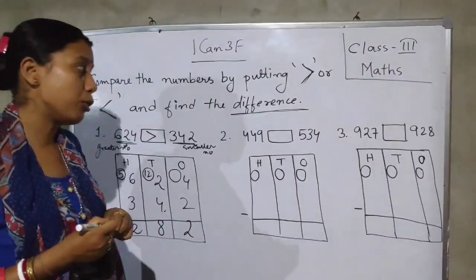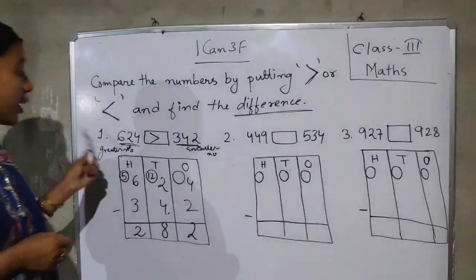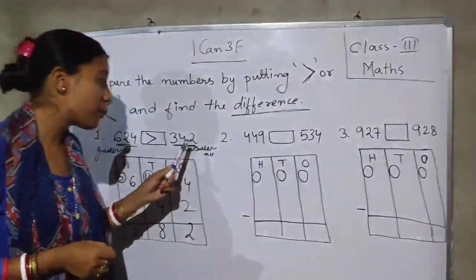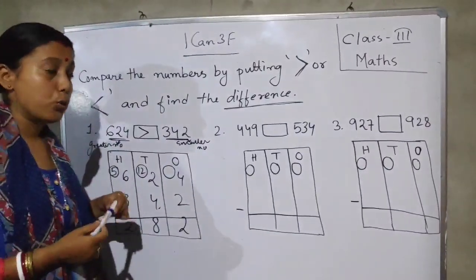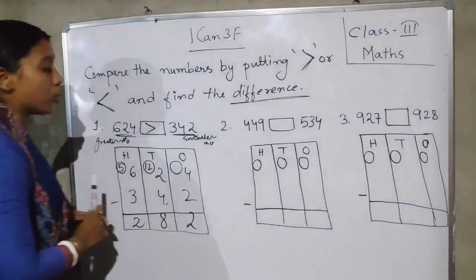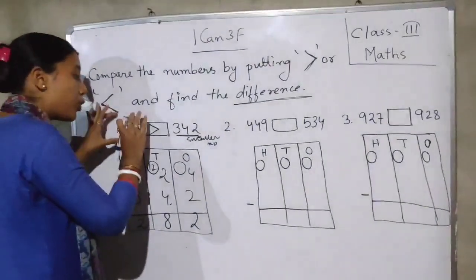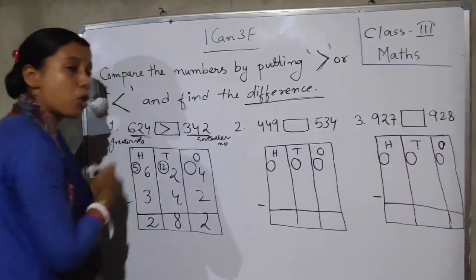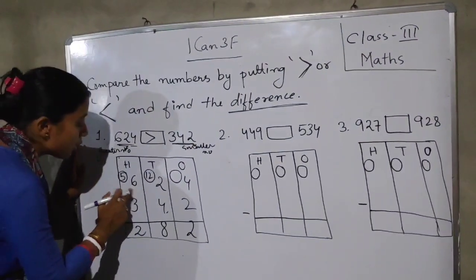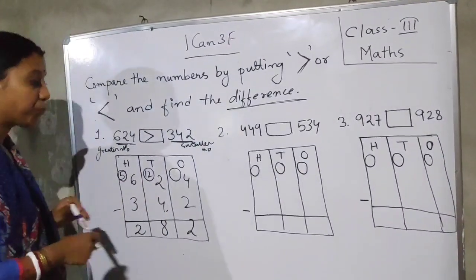So, all of you: first we compare the two numbers, put the comparison sign, and then find the difference. Finding the difference means doing subtraction — always subtract the smaller number from the greater number. We can never subtract a greater number from a smaller number. So: 624 minus 342.